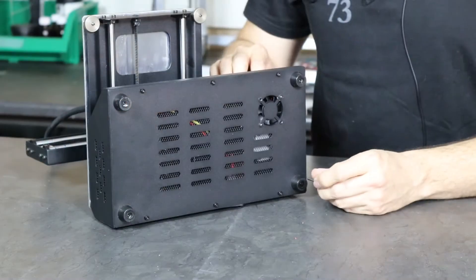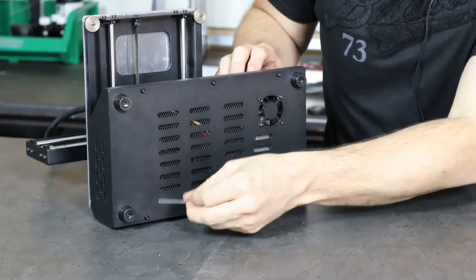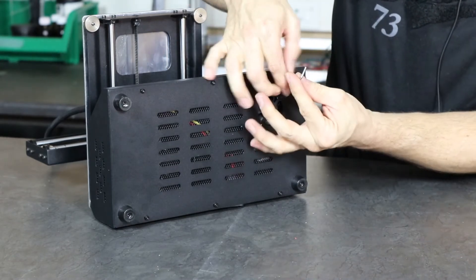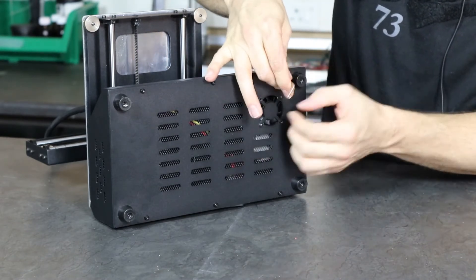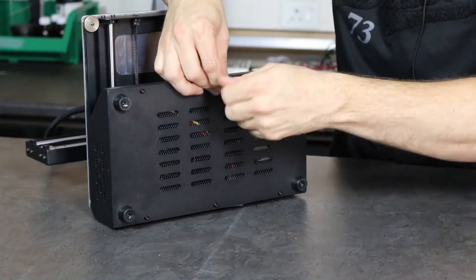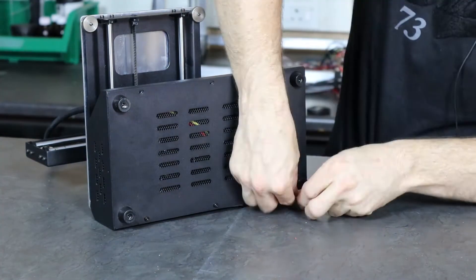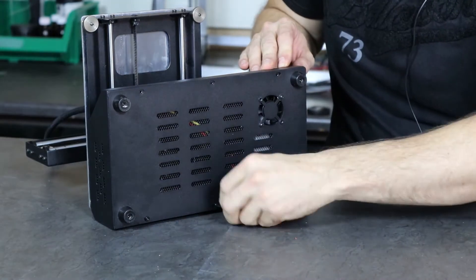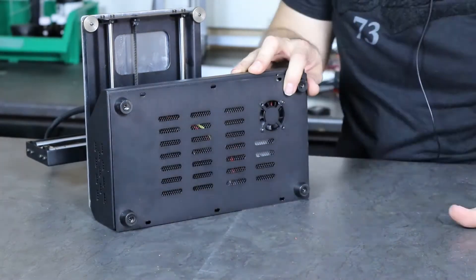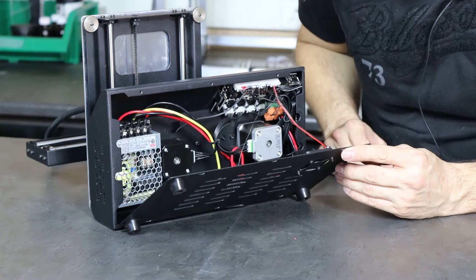All right, so close-up of the machine. First thing I see is there are six bolts on the bottom, I'm gonna start by taking those out.